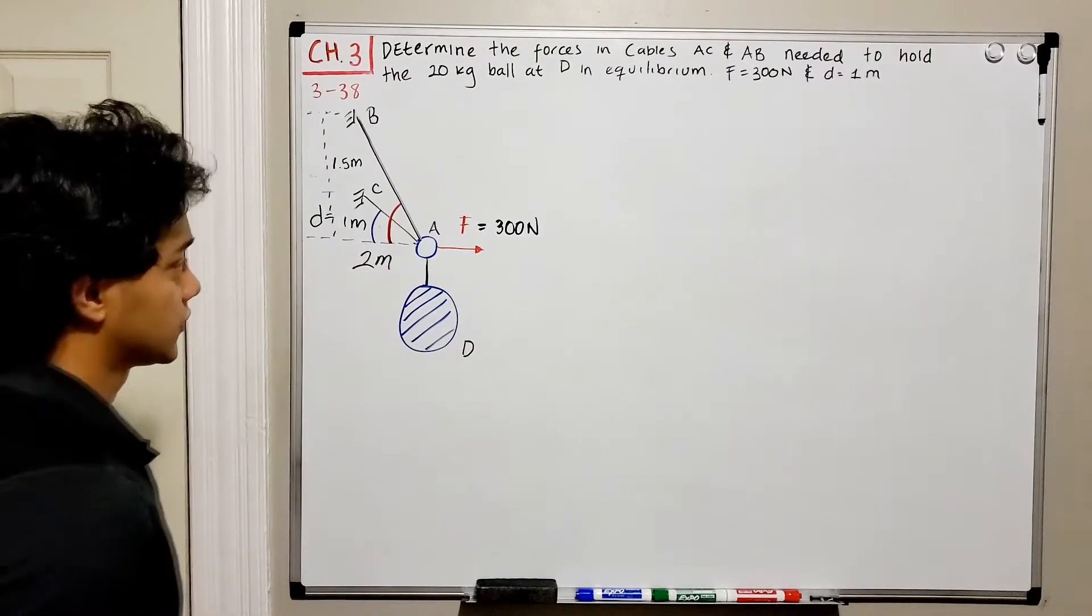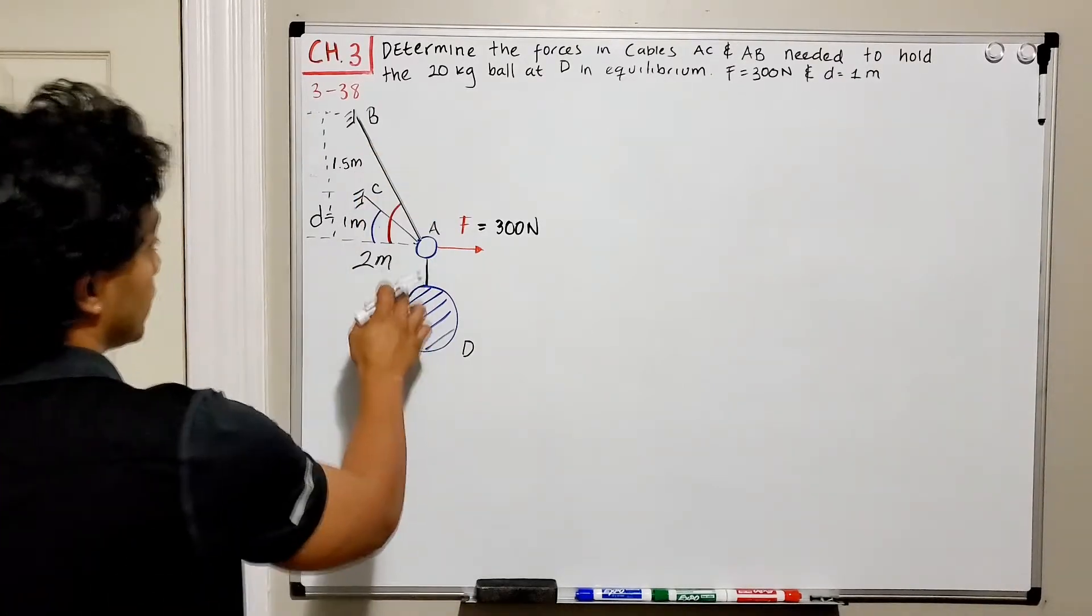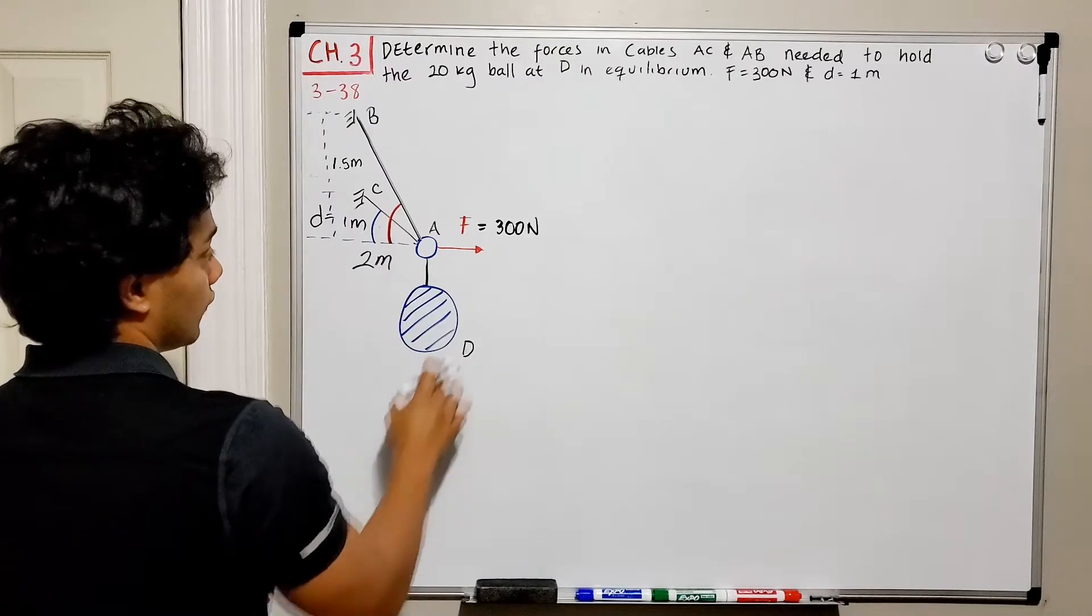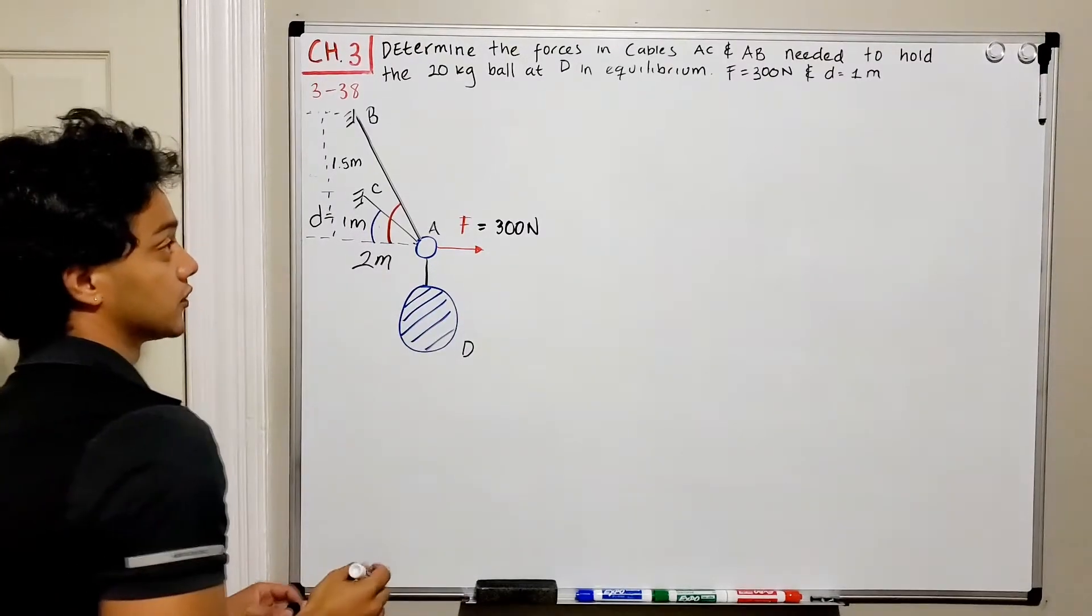So we have these two cables, cable AB and AC. And we have this ball hanging over here. And we also have a force pulling to the right.